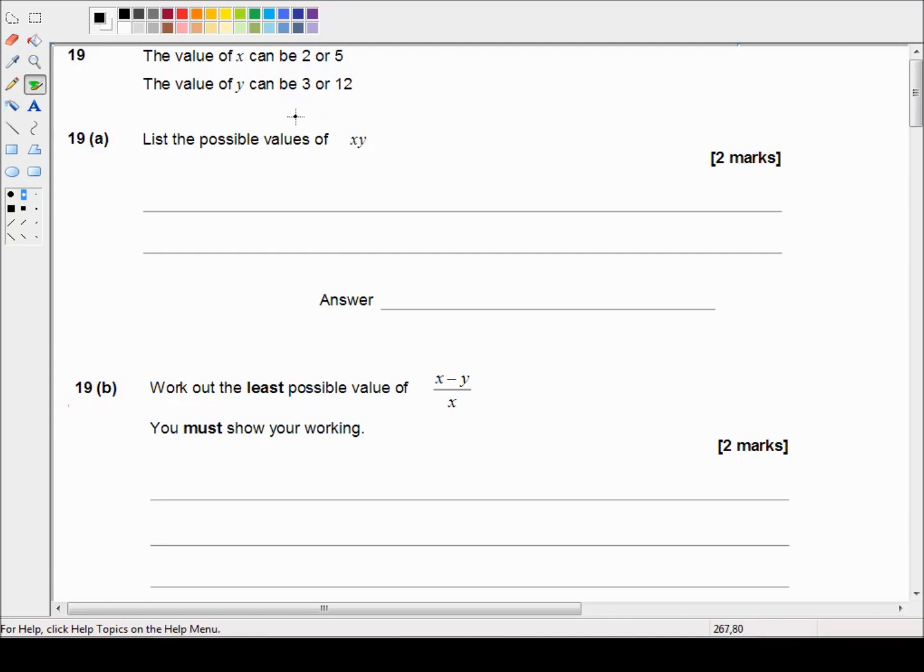So let's start with x equals two. If x equals two then we've got two times three is a possible answer and two times twelve is a possible answer. And then if x is five we've got five times three is a possible answer and five times twelve is a possible answer. So those are our four possible answers.